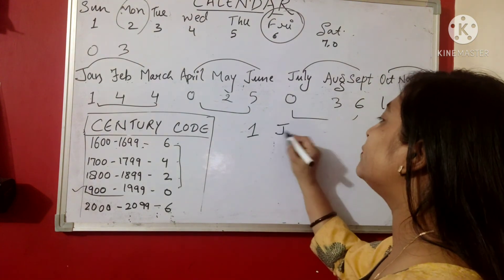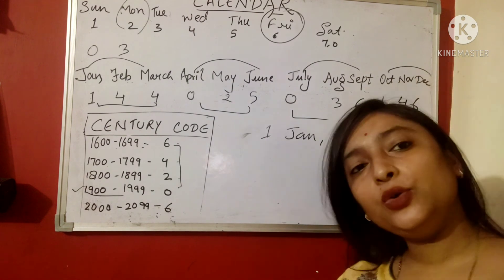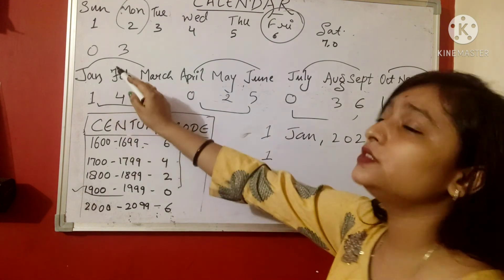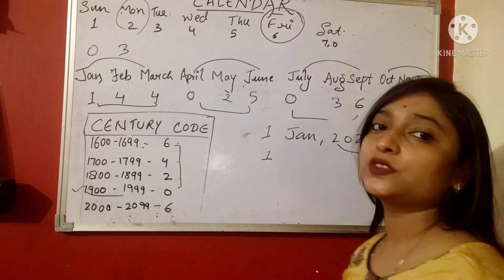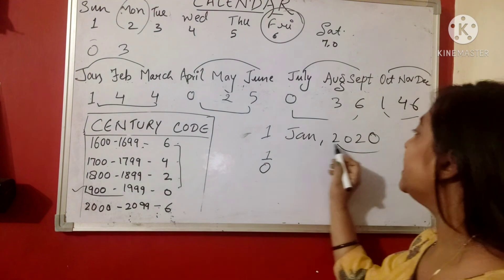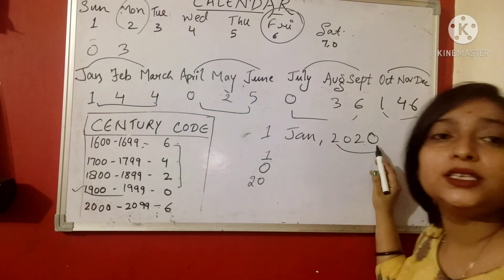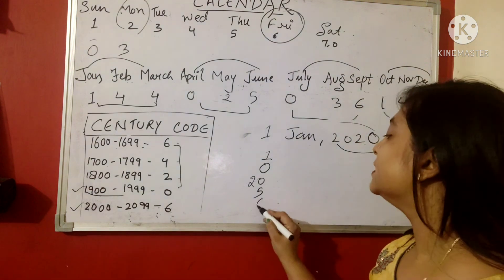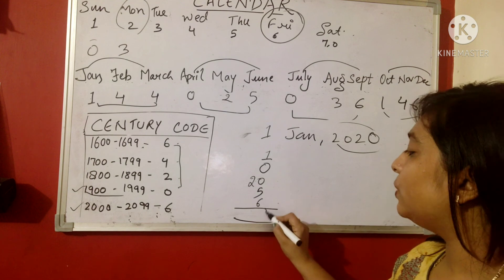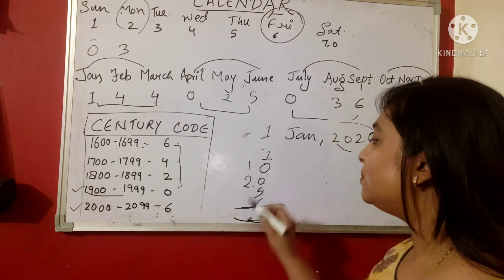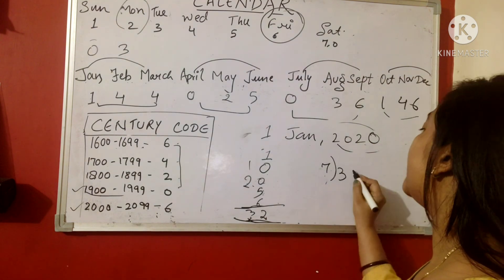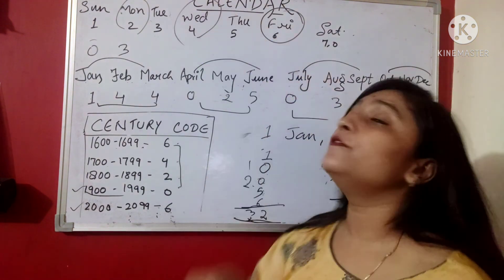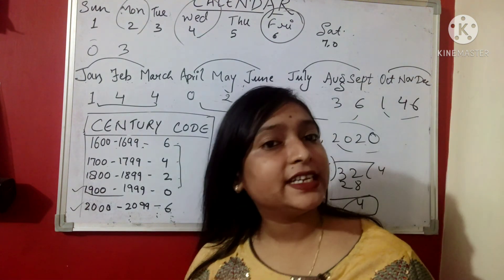Let's do a leap year example: what day was 1st January 2020? Date = 1. Since 2020 is a leap year, January's code = 0 (not 1). Last two digits = 20. Quotient of 20 ÷ 4 = 5. Century code for 2000–2099 = 6. Adding: 1 + 0 + 20 + 5 + 6 = 32. Dividing 32 by 7 gives remainder 4, and 4 is the code for Wednesday. So 1st January 2020 was a Wednesday.